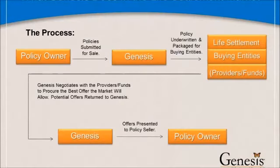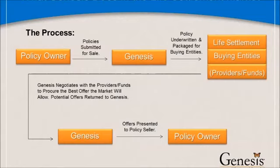I'll talk briefly about how value is determined within the market. Generally, what we intend to do is create arbitrage. Arbitrage is what determines value within the life settlement market. An individual owns a standard or preferred policy that had been issued some years ago, and today they are not in that health category — perhaps they are slightly rated. That creates an arbitrage where we have a standard or preferred performing life insurance policy versus a current medical condition which is rated or below where the policy was issued.